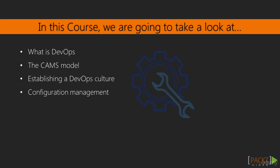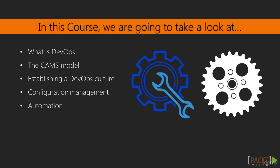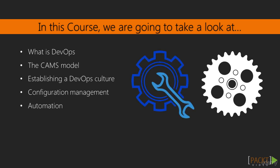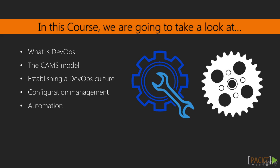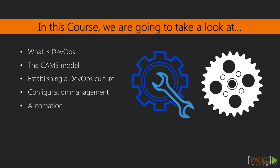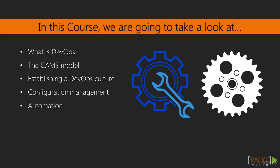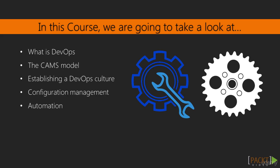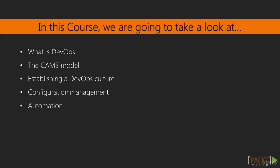We're going to talk about configuration management and automation. In those sections, we'll have lots of code examples. We'll be firing up instances in the Google Cloud or in the Amazon Cloud, and we'll be trying out different things to see what we can learn.